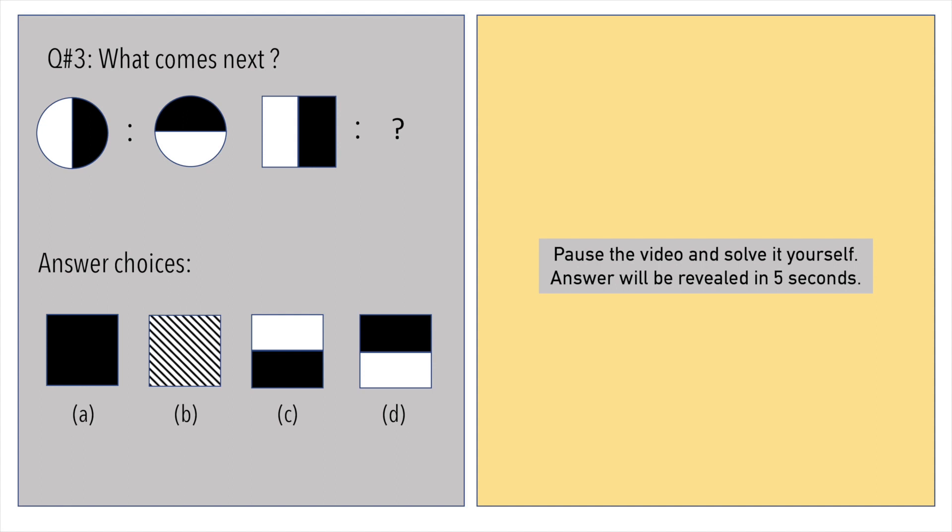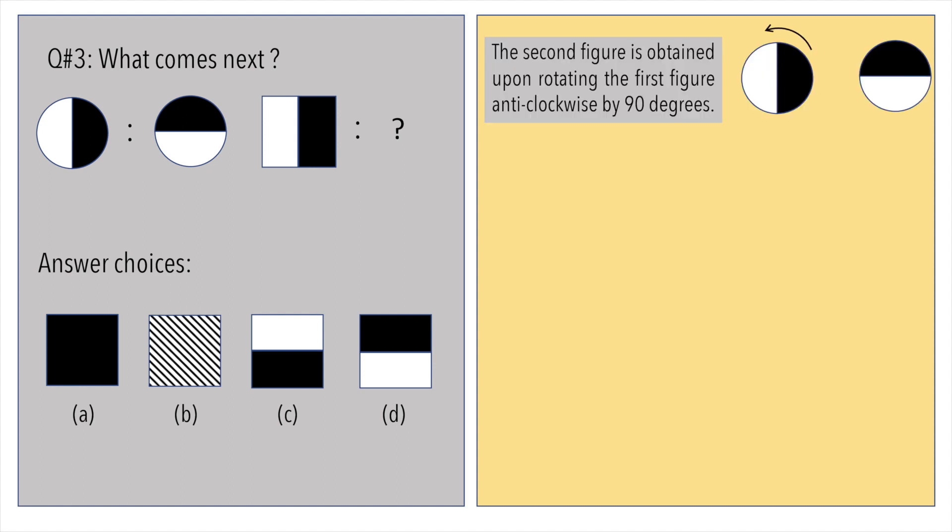What comes next in the series of patterns? The second figure is obtained upon rotating the first figure anticlockwise by 90 degrees.